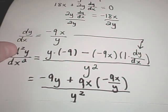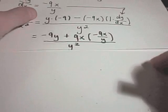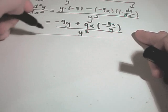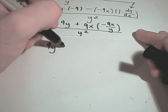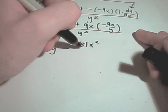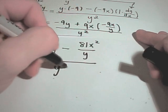And again, I'm just going to keep cleaning this up, doing some algebra. All right, so we've got negative 9y. I'll get negative if I multiply 81x squared on top over y. And that's all being divided by y squared.